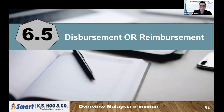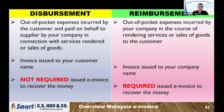The next topic is disbursement and reimbursement. Many people do not understand the difference between the two. Disbursement means out-of-pocket expenses incurred by the customer, but paid on their behalf by you — and the invoice is issued under the customer's name, but you pay on behalf of the customer. That falls under disbursement. Reimbursement means out-of-pocket expenses incurred by your company when you perform your service or sell goods to your customer, but the invoice is issued under your company's name. The key difference: disbursement has the invoice in the customer's name; reimbursement has the invoice under your company's name.